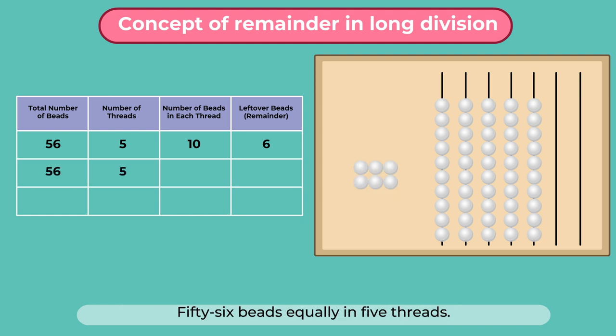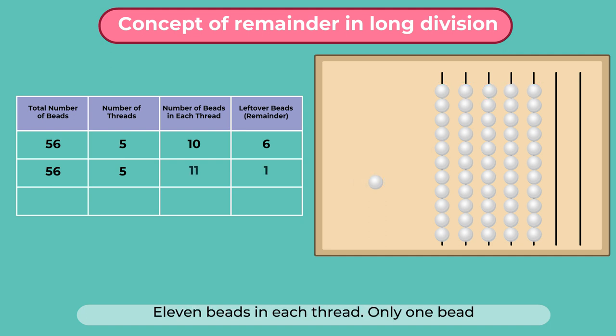Let's string 56 beads equally in 5 threads. That is 11 beads in each thread. And we are left with only 1 bead after the process.